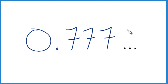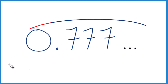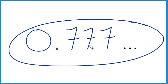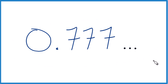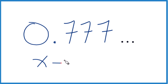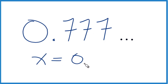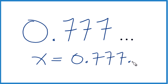Say you got this decimal 0.777 and it just keeps repeating. How do you get that to a fraction? Here's one way to do this: you take this and say x equals 0.777 repeating.